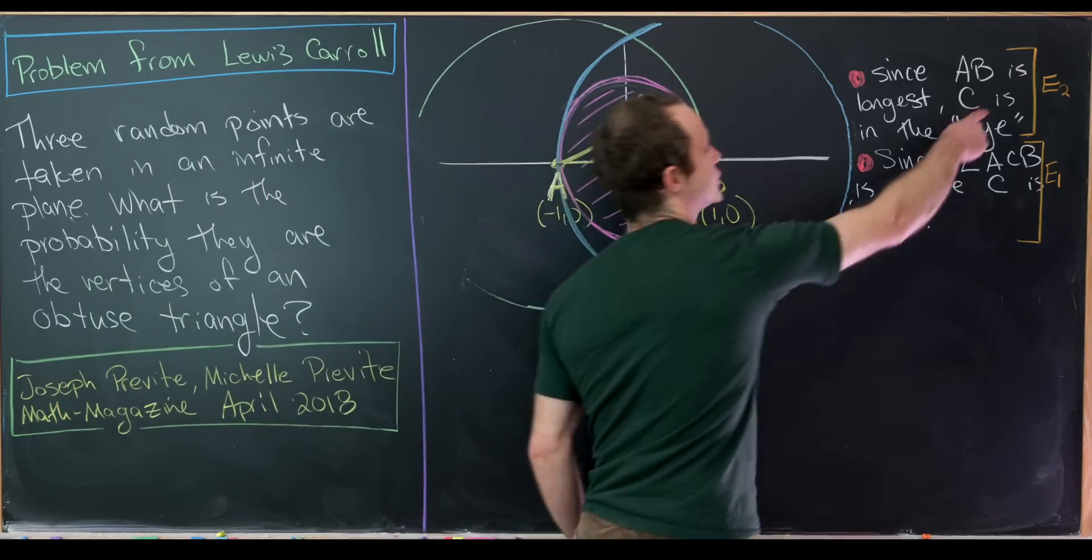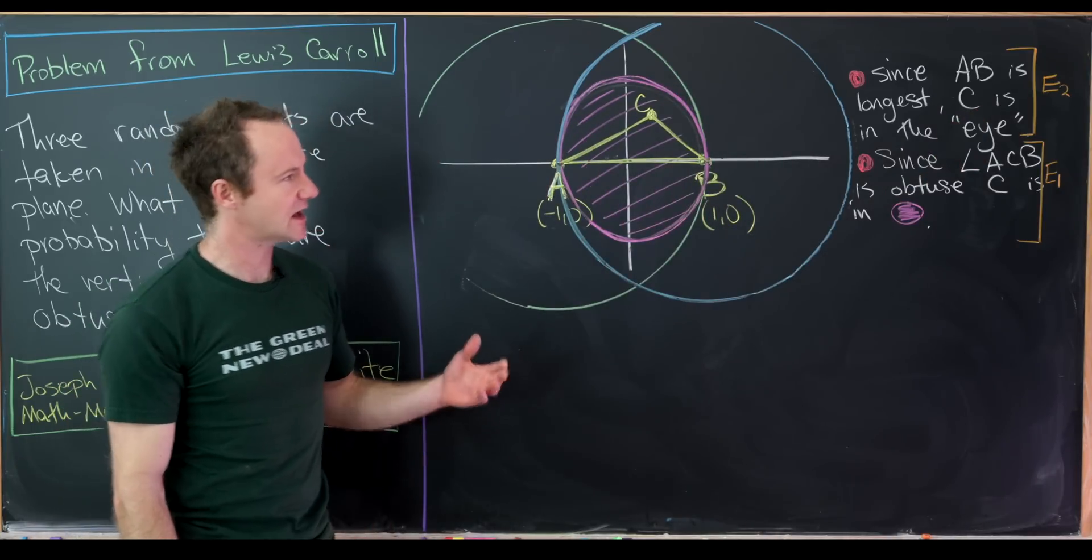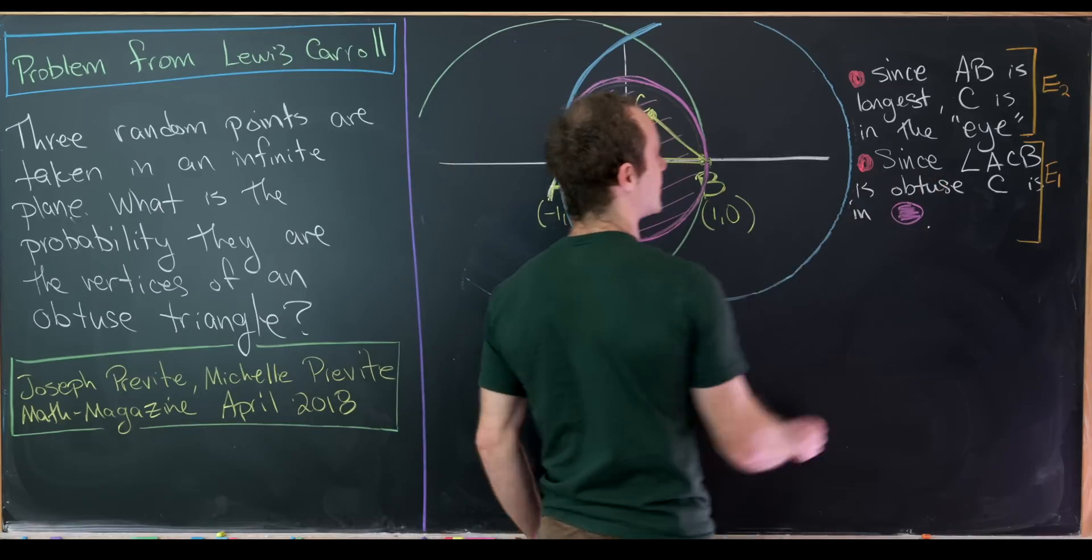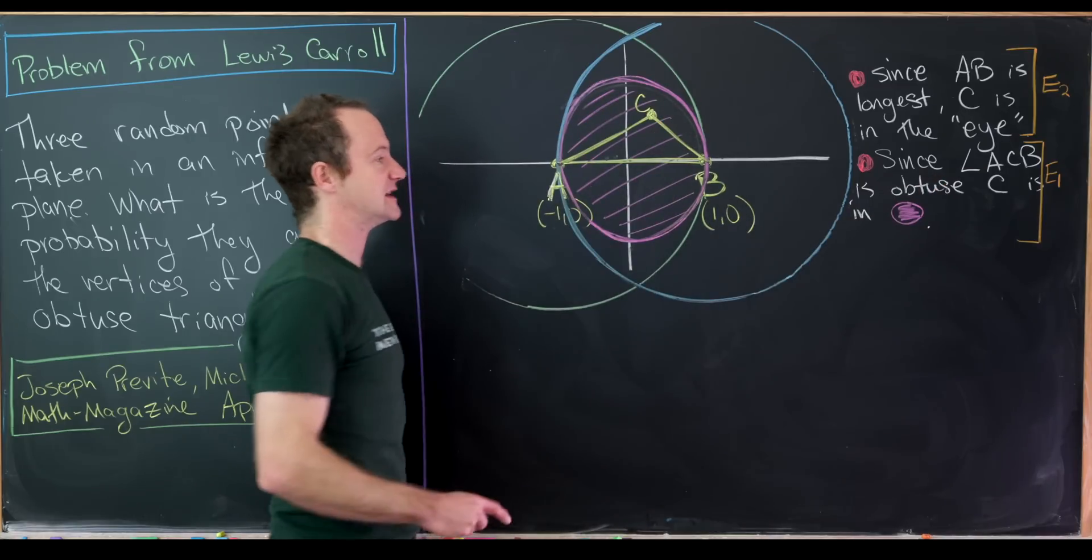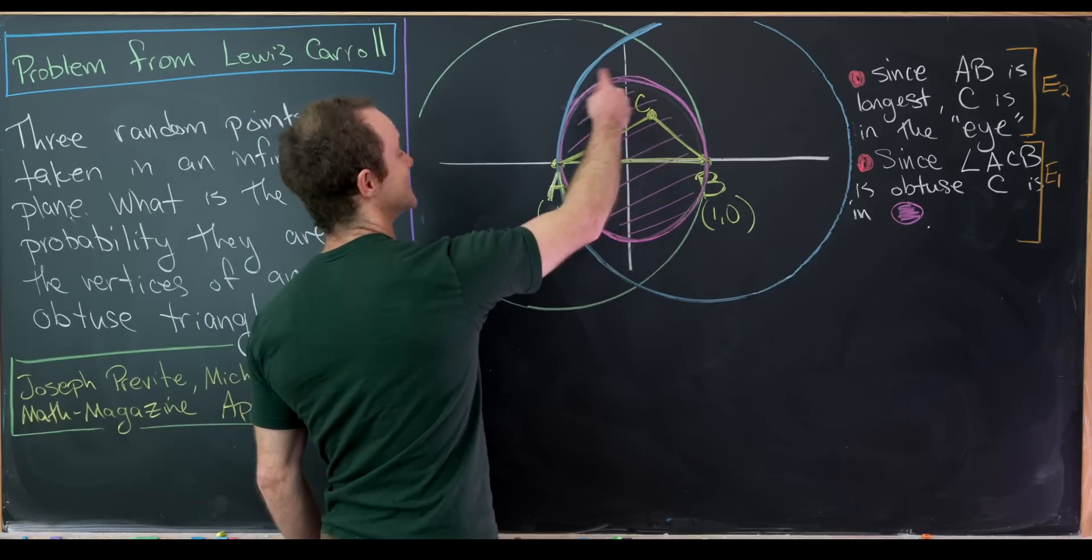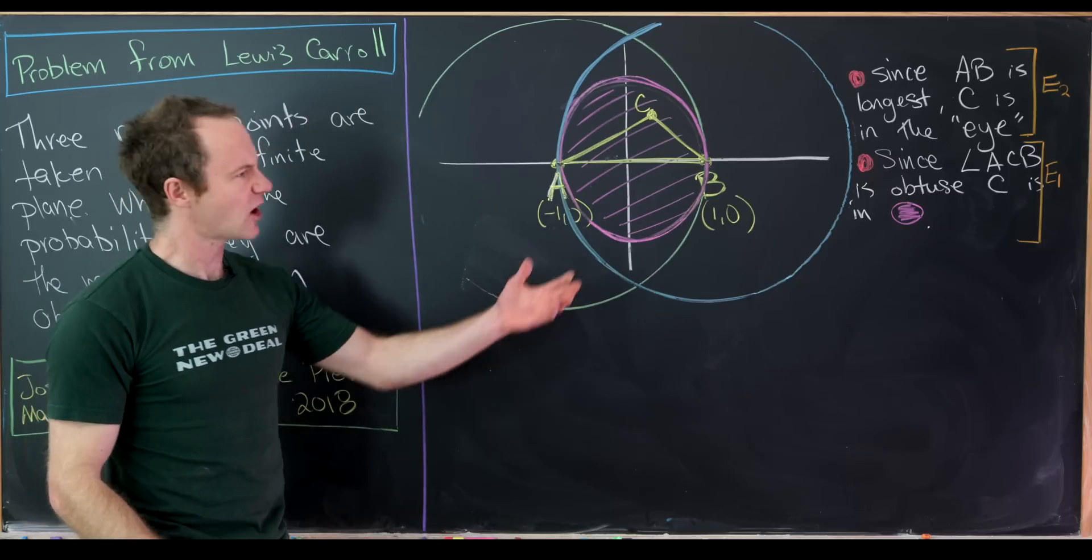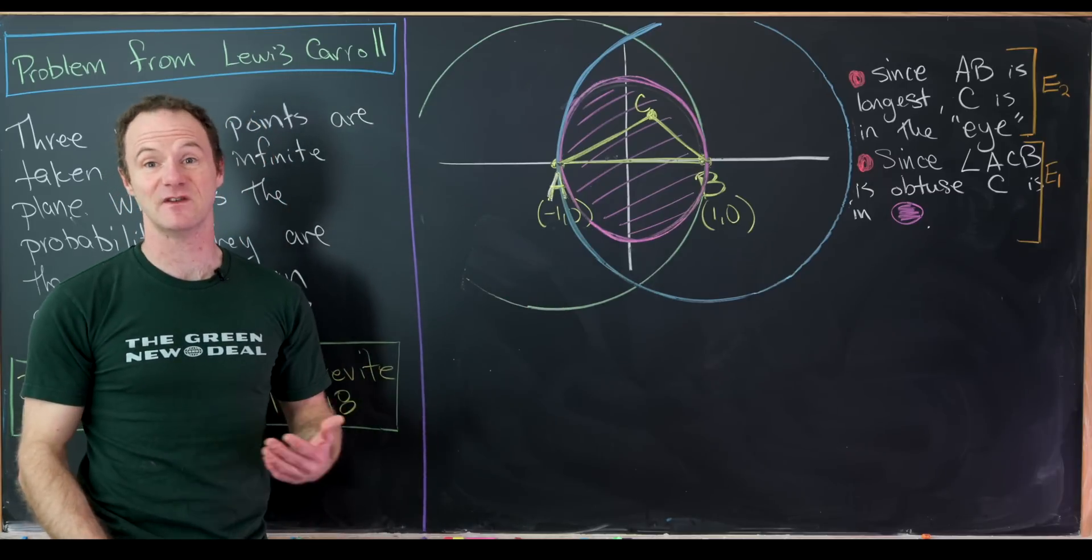I've called that E2 for like event E2. Then since angle ACB is obtuse, we know that C is in fact inside this magenta inner circle. So I've called that E1. So that's like event E1.